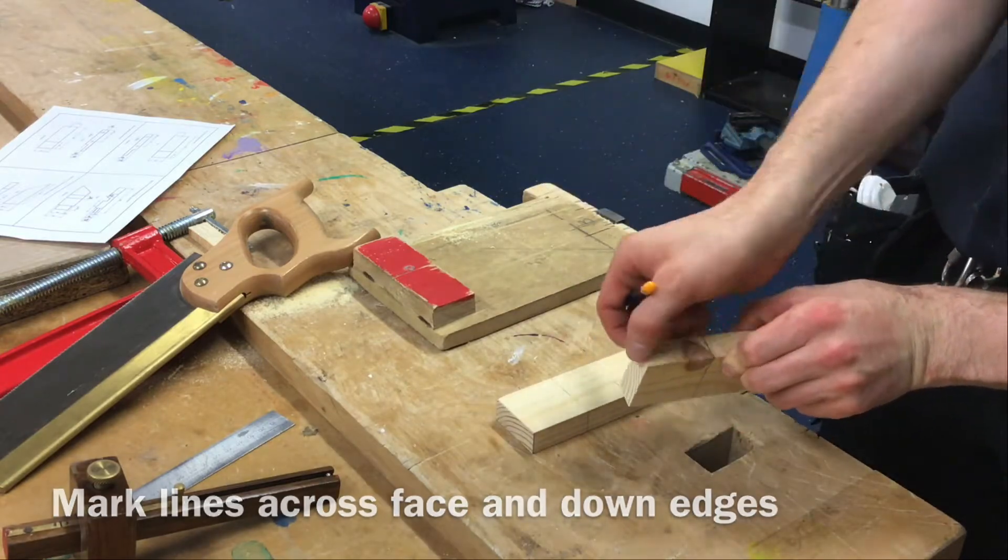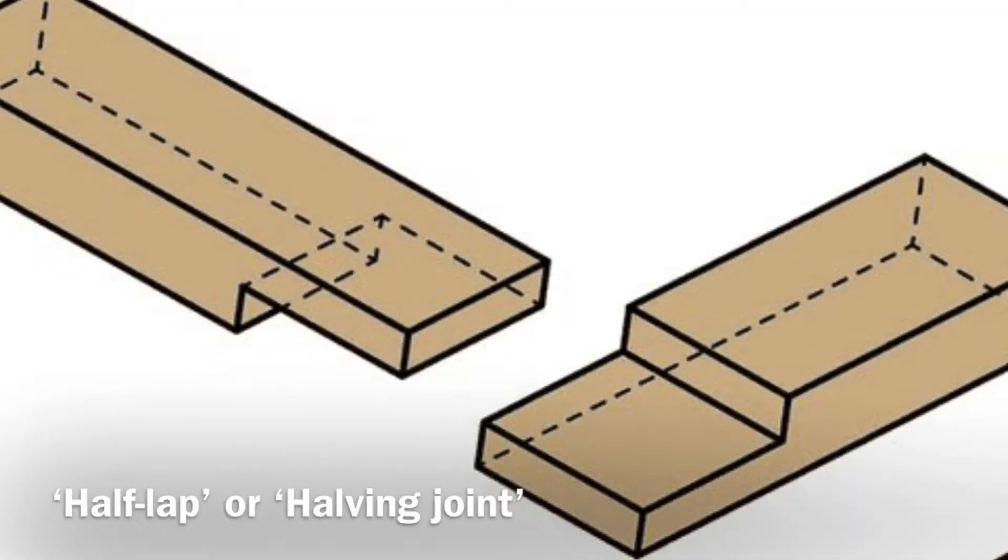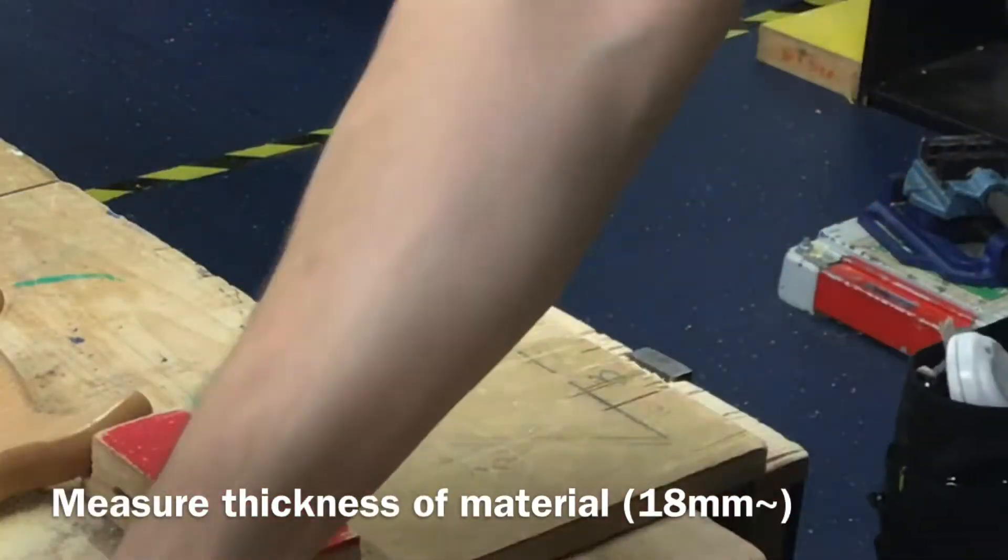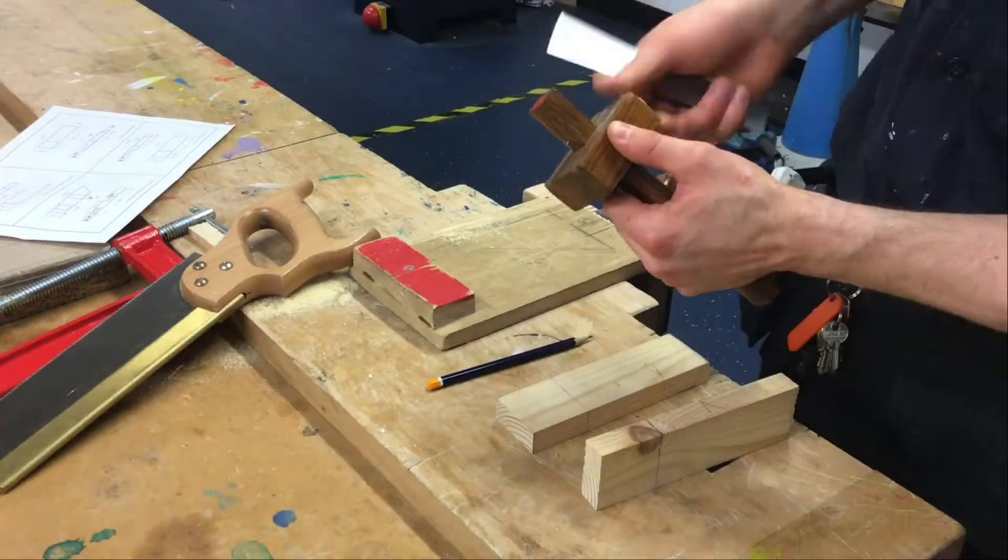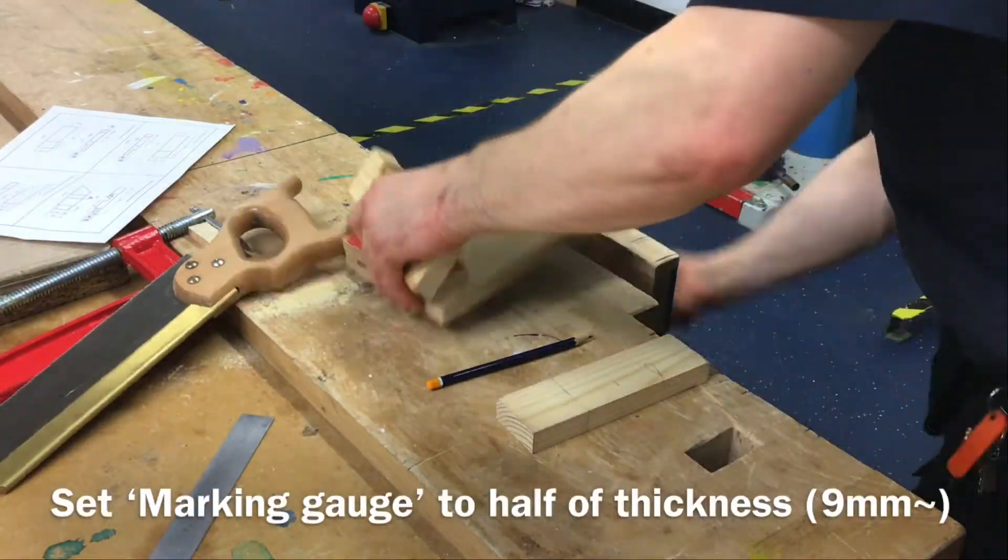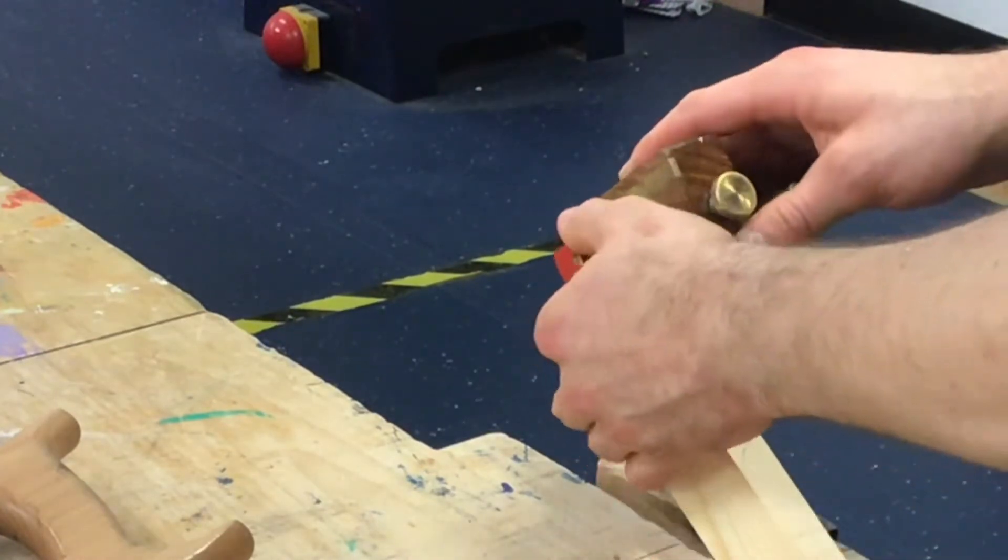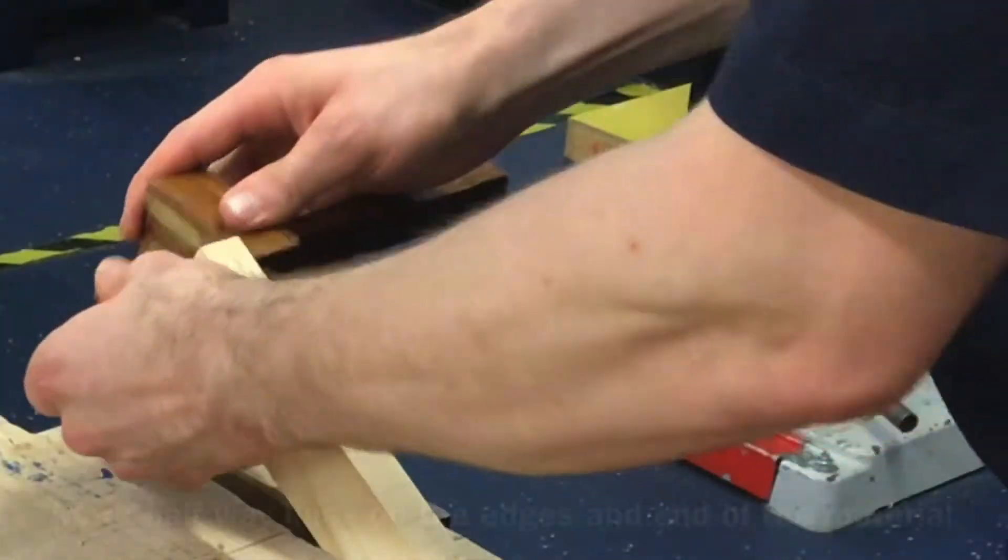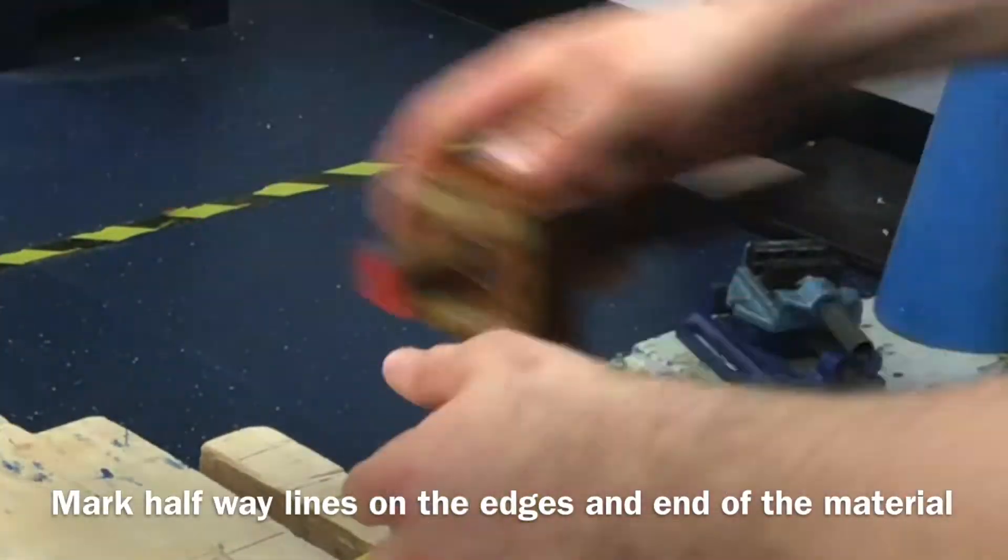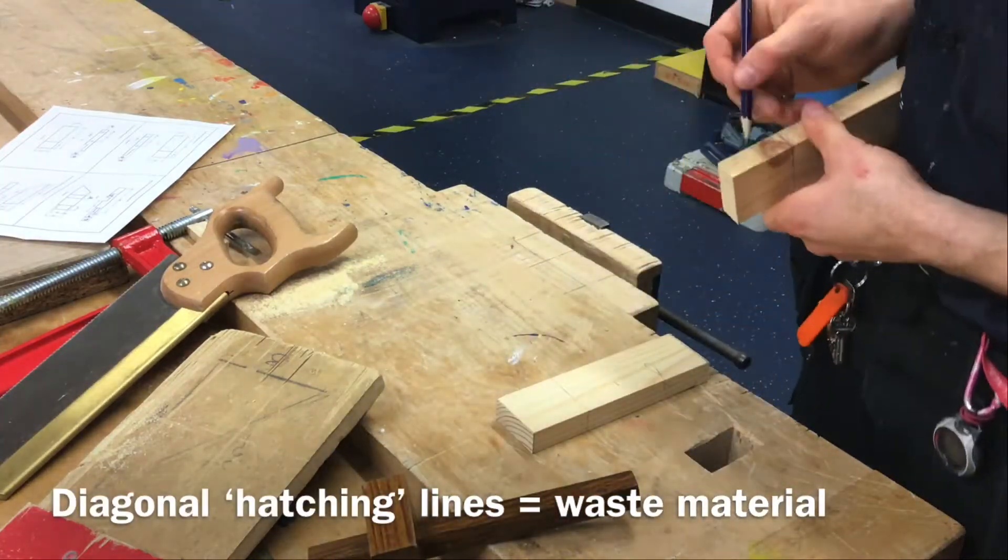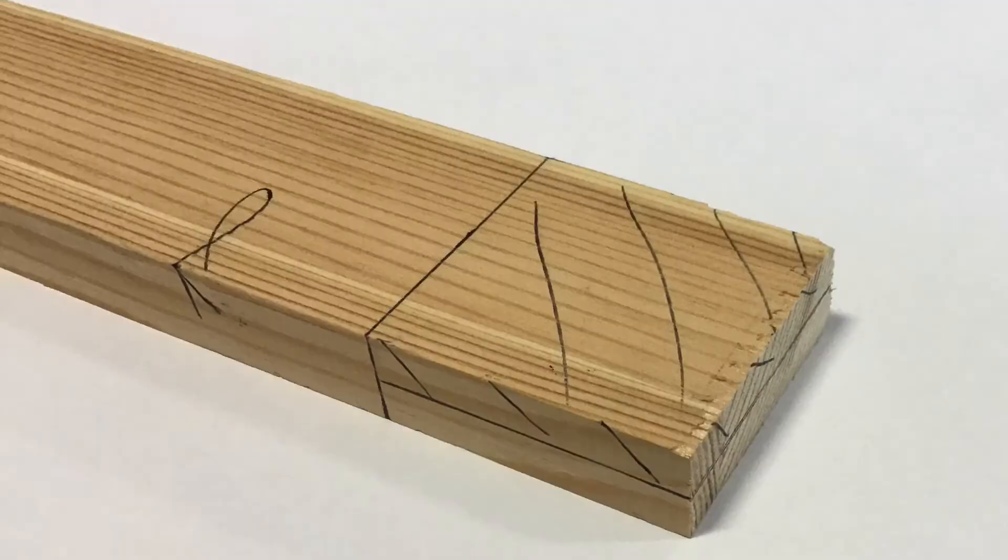If this is a half lap joint I'm wanting to mark halfway down the thickness of my material. I'll measure my material - 18 millimeters thick. Take my marking gauge, set it to 9 millimeters. I'll go across the edge, along the end grain, across the edge. I'm going to mark on hatching lines, these diagonal lines to say that's waste material.